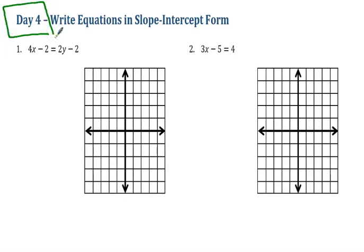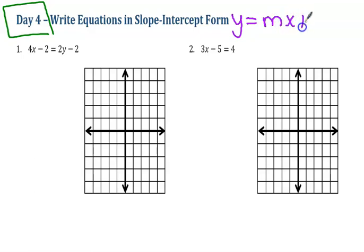Slope-intercept form is y equals mx plus b. Before we graph, we're going to have to solve — meaning getting y by itself. So let's move right along and try the first two.